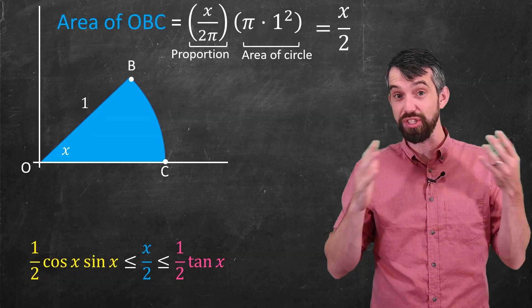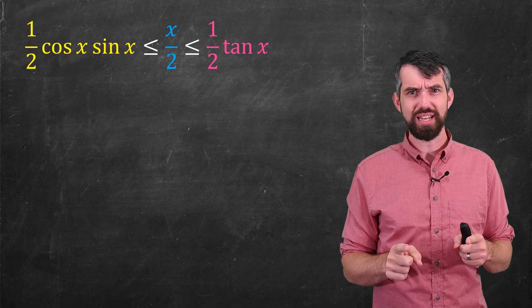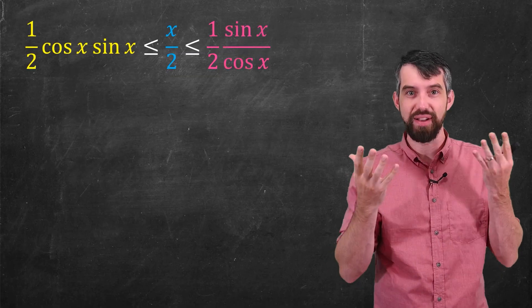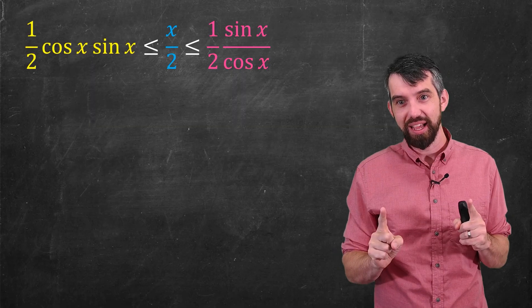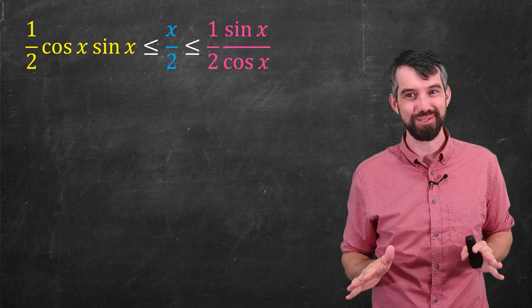So that's the geometric setup here. Now I'm just going to do a little bit of algebra to this inequality. First things first, I don't like my tangent. I'm going to replace it with sines and cosines, so tan of x is sine of x over cos of x. Second, I see that there's a half in front of every one of these terms. Let's get rid of the half.